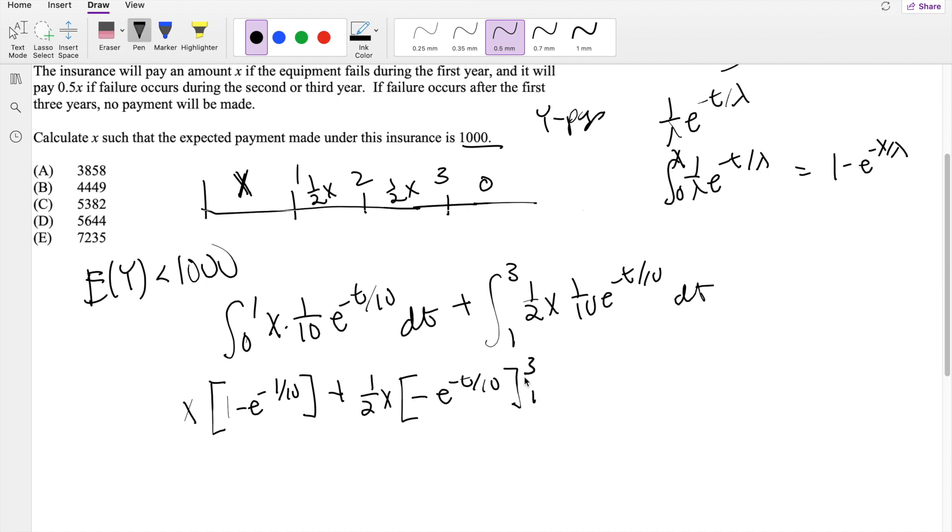Integrating from 1 to 3, so you get this is equal to one half X, E to the negative 1 tenth minus E to the negative 3 tenths plus X times 1 minus E to the negative 1 tenth.